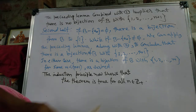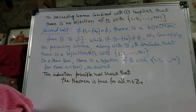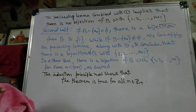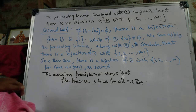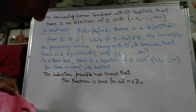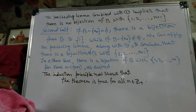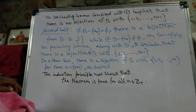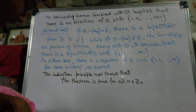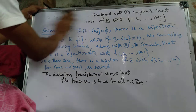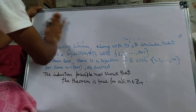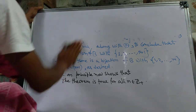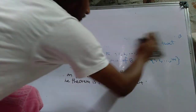So we have proved this theorem: suppose that there exists a bijection f from A to {1, ..., n} for some n in Z plus. Let B be a proper subset of A. Then there exists no bijection G from B to {1, ..., n}. But provided B is not equal to phi, there exists a bijection h from B to {1, ..., m} for some m less than n. This is an easy theorem, but we proved it.